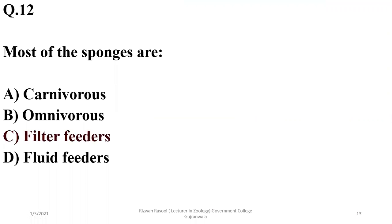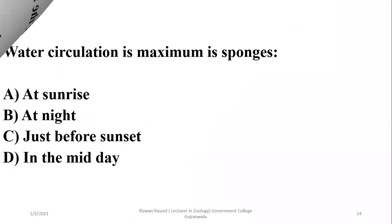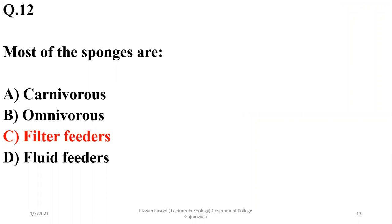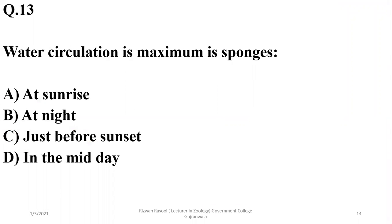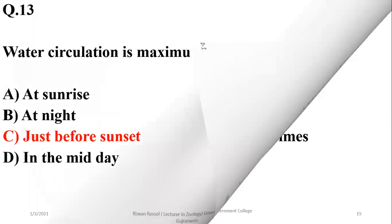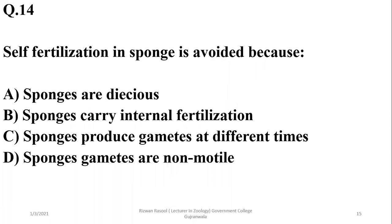Most of the sponges are filter feeders, but a few are carnivorous as well, so the right option is charlie. Number thirteen: Water circulation is maximum in sponges just before sunset, so the right option is charlie.